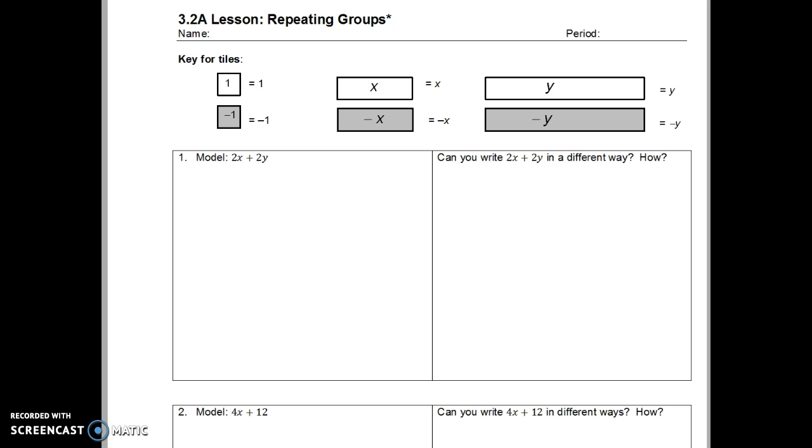This is lesson 3.2a, which is repeating groups. I know what's coming, so I do have some things that I'd like to add in that are not part of the lesson. So just listen and do as I ask you to do. And it'll all become clear in a couple of lessons. Alright, so this idea of repeating groups, we have this key for tiles. We've got 1 and negative 1, x and negative x. And for the purposes of this discussion, we have also created an imaginary y tile. And y is a variable as well, so we don't know how long it is. It's sort of arbitrary. We're going to make them longer than the x tiles.